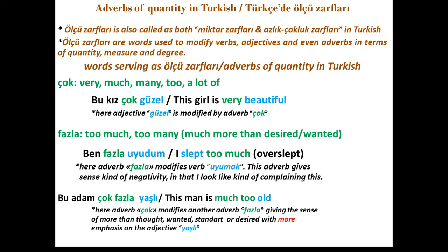The first adverb of quantity is 'çok', translating as very, much, many, too, or a lot of, depending on whether the noun is countable or uncountable. For example: 'bu kız çok güzel' translates as 'this girl is very beautiful'. Here, the adjective 'güzel' is modified by the adverb 'çok'.